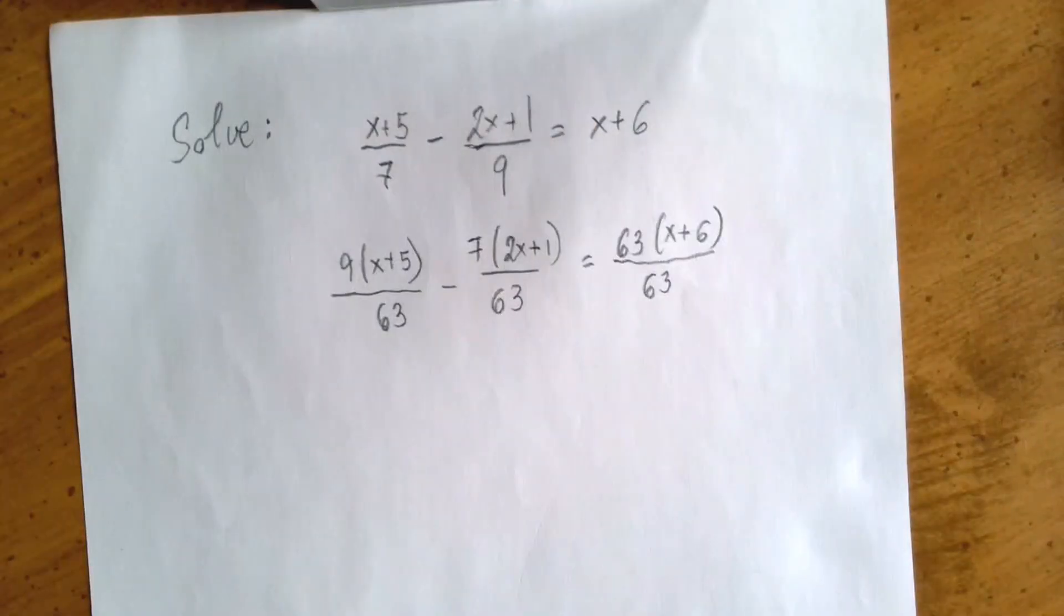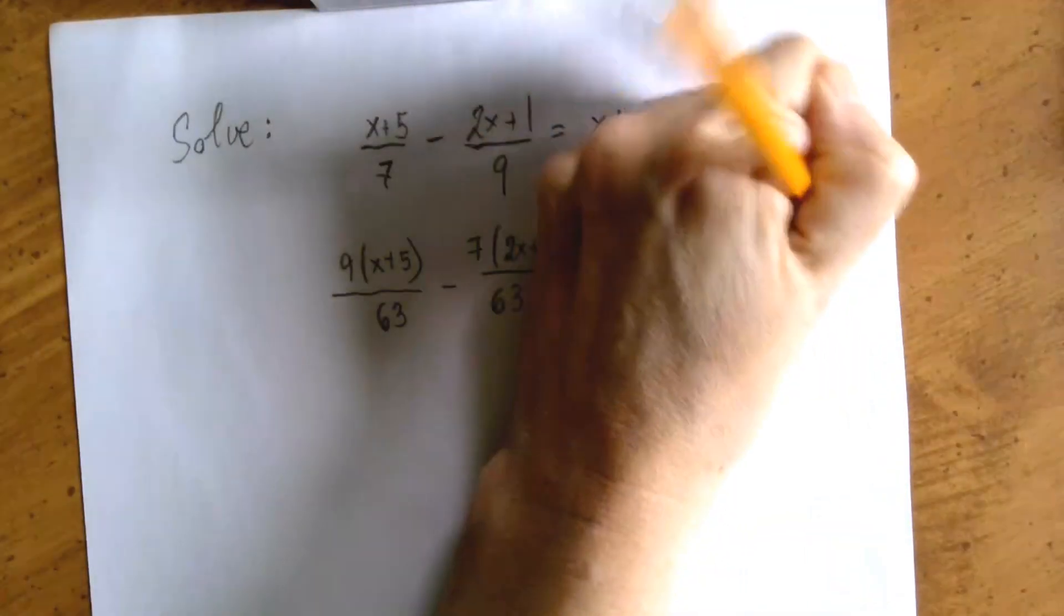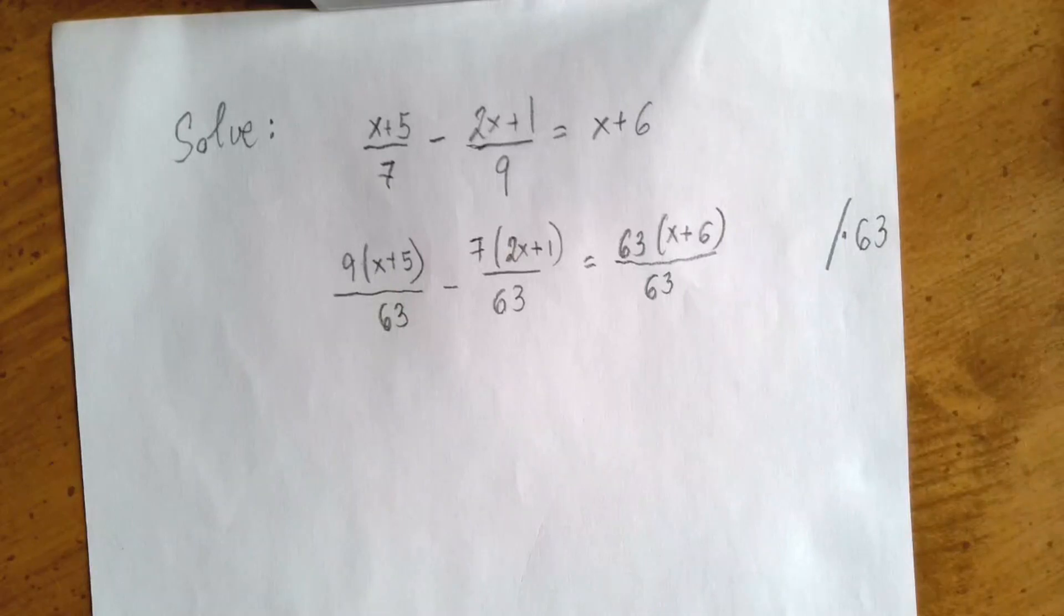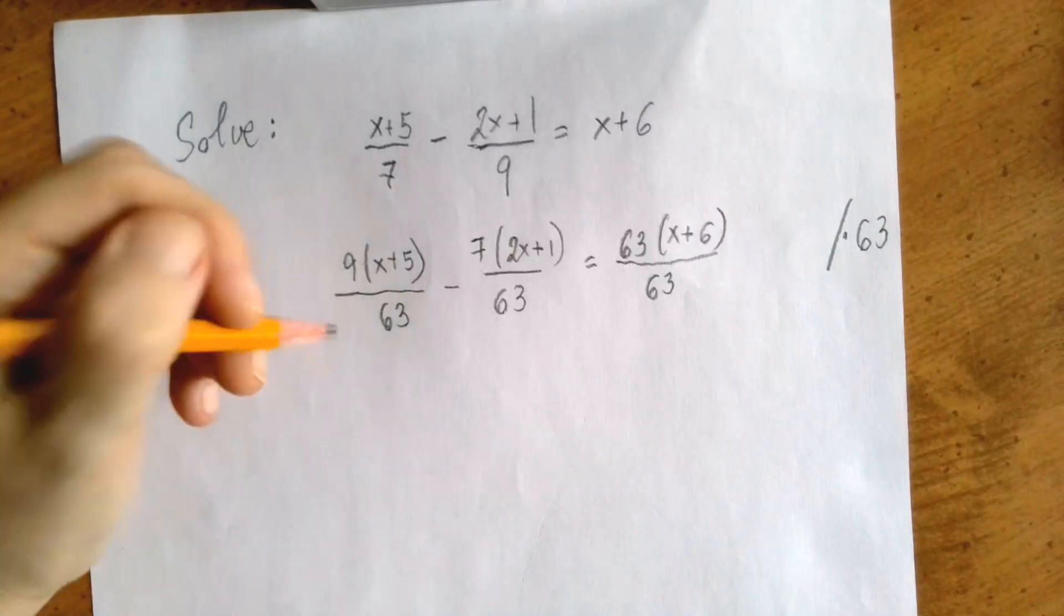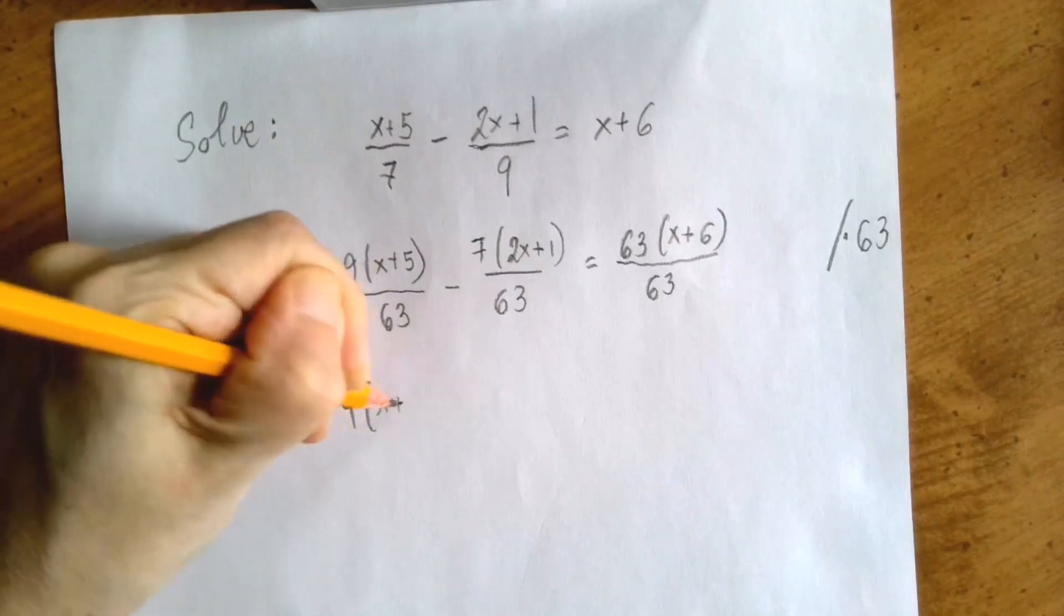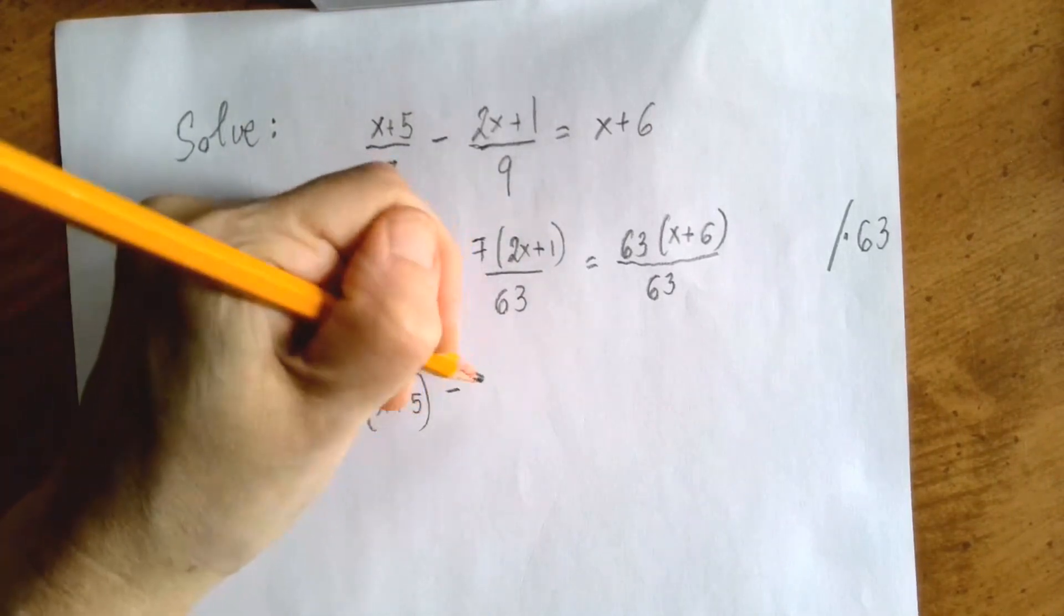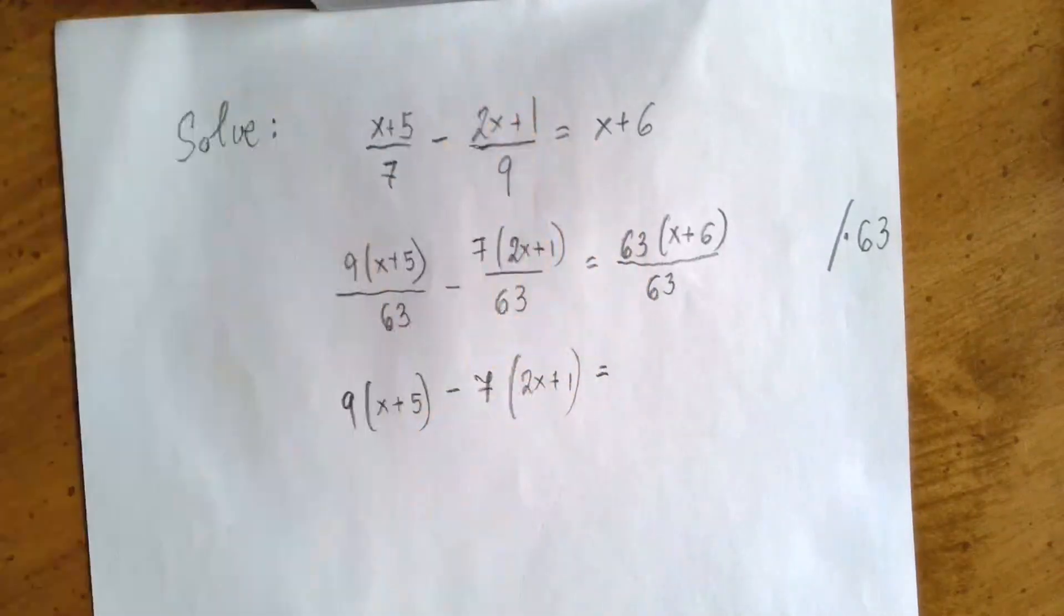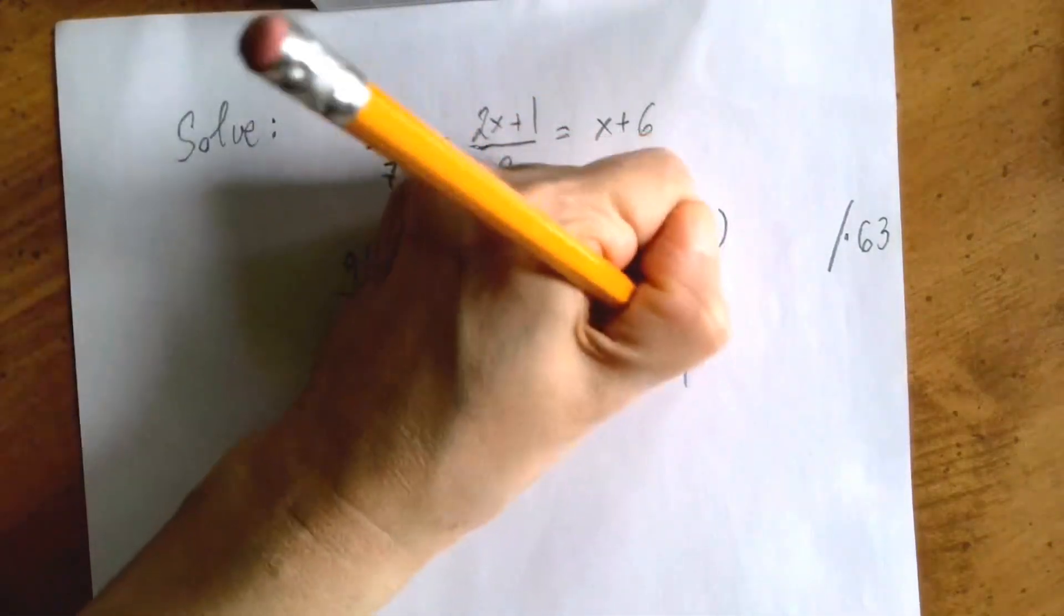So we just brought the three expressions to the common denominator, and now we are just going to make it all go away by multiplying by 63. Then what is left is 9 times x plus 5 minus 7 times 2x plus 1 equals 63 times x plus 6.